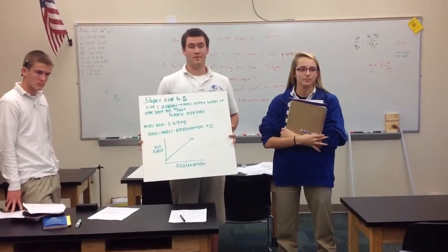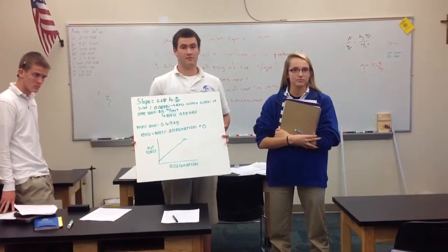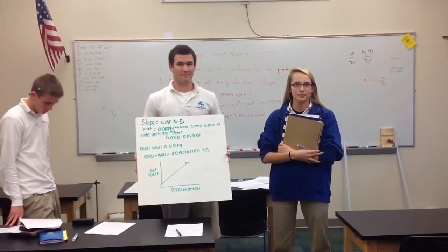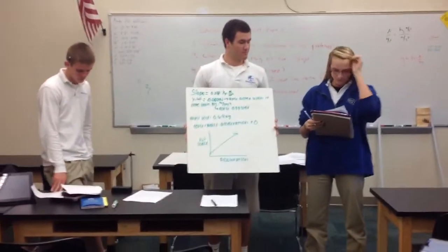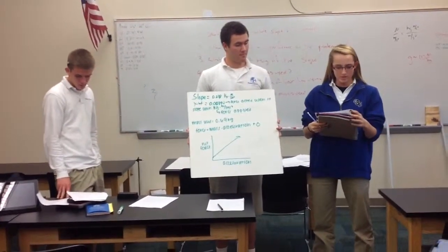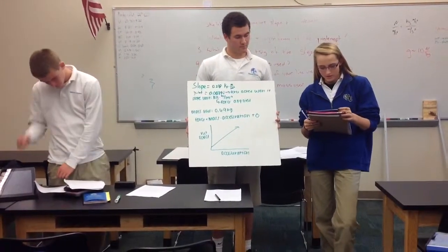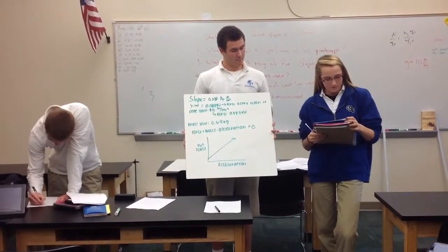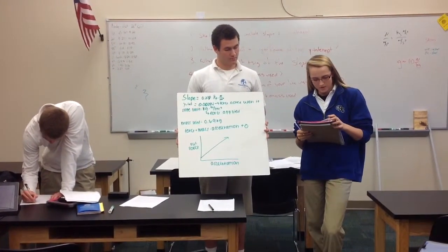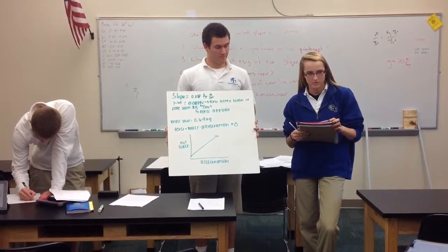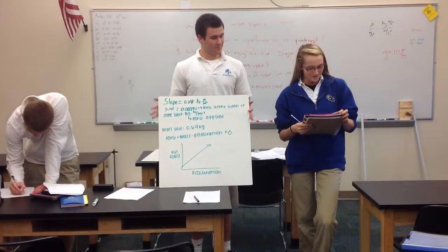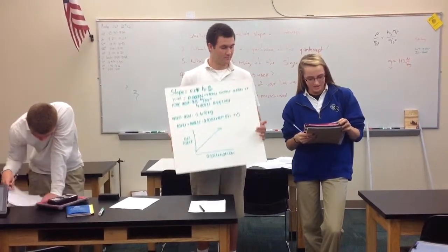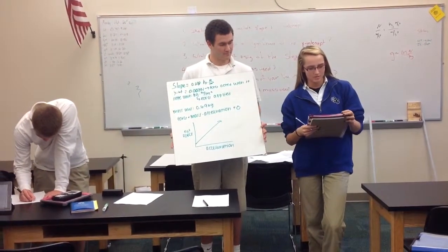If you're just sitting there doing nothing right now, you should be writing down group one's data as they are sharing it. So can you share the slope, mass, and mass difference again? Our slope was 0.218, our mass was 0.69 kilograms, our raw difference was 0.15042, and the factor difference was 3.17.